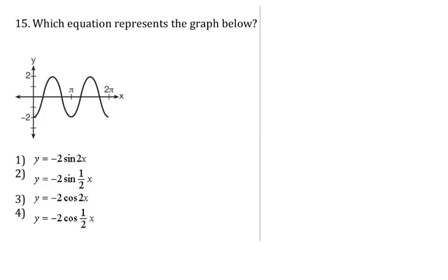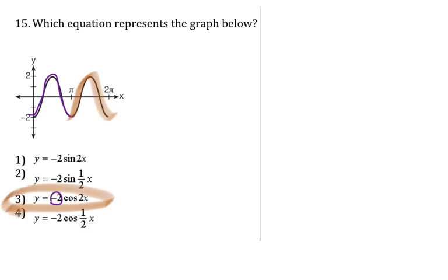Number 15: within 2π I see two cycles of cosine, so I'm looking at 2·cosine. Choice 3 is the only correct one. Notice there's a negative sign, which is why it starts from the bottom instead of from the top.